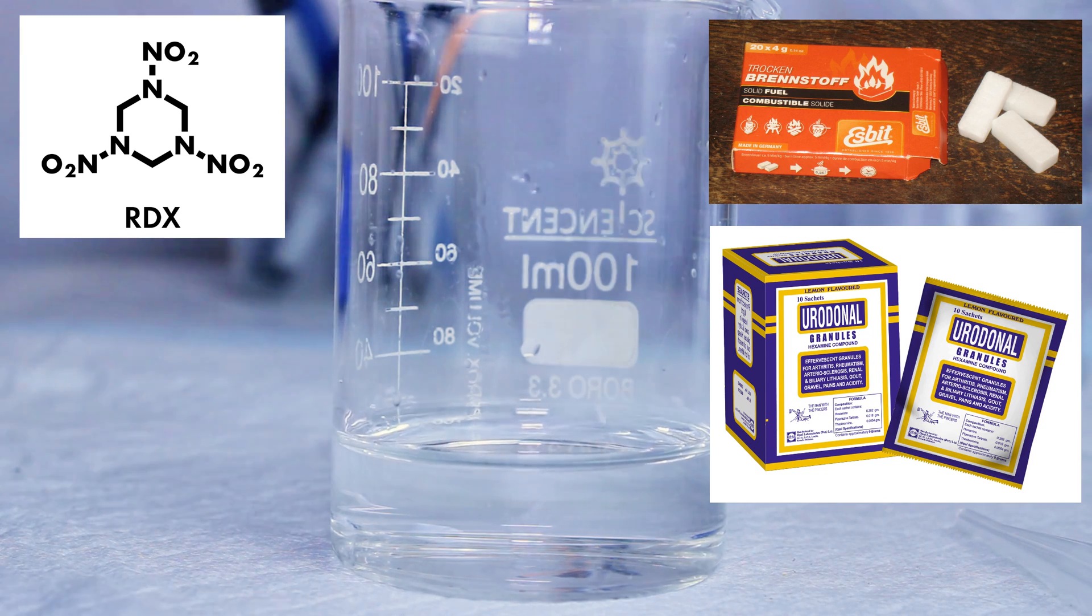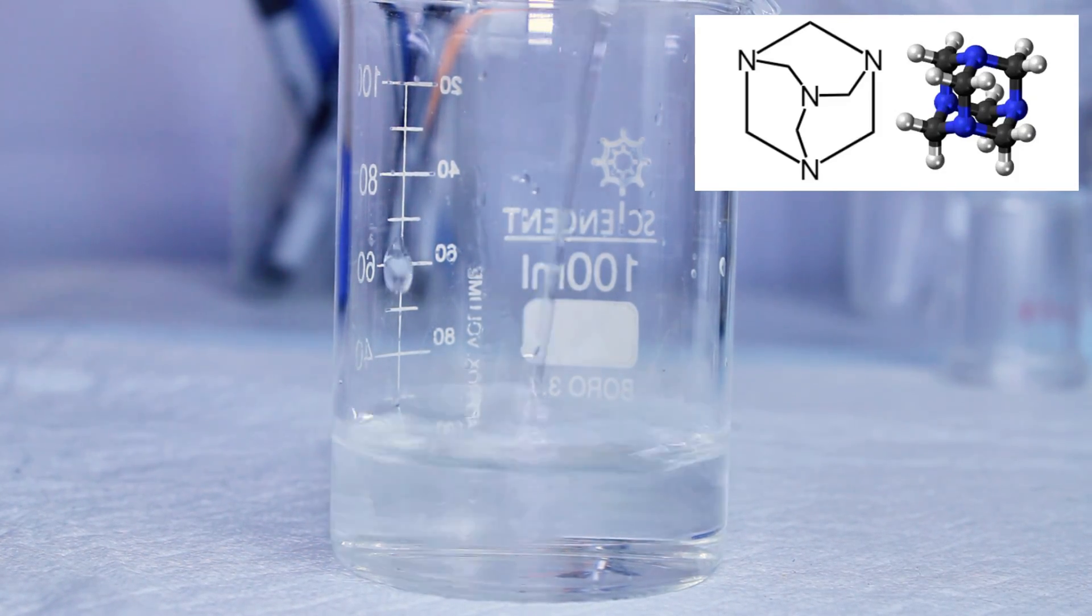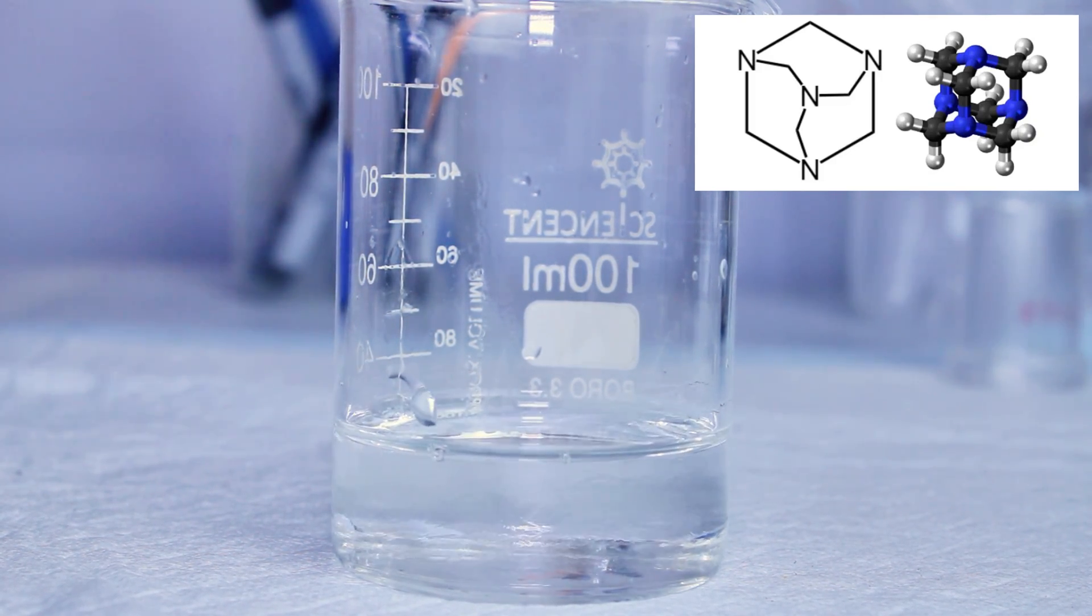What I find the most fascinating about hexamine though is its structure, with the molecule itself being composed of 3 heterocyclic rings that are fused, and it kind of looks like a weird tetrahedron.